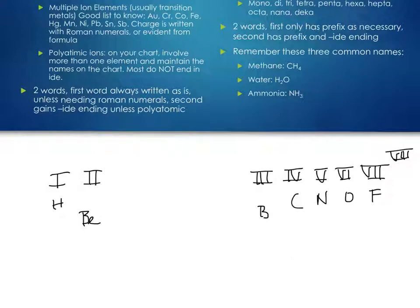The charge is based on the number of valence electrons matching the group number. At the low end, elements give up electrons and make positive ions: plus one, plus two, plus three. Group four — carbon — doesn't really form ions, and tin and lead fall into the group of making multiple ions. After group four, nitrogen forms negative three, oxygen negative two, and halogens negative one.